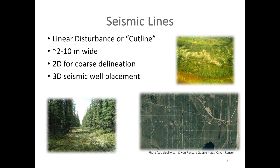There are two different classifications. Two-dimensional seismic lines are used for coarse delineation and tend to be wider. Then we have 3D seismic lines, which are for more detailed well placement. You can see in some of the pictures here this dense network of narrower 3D lines, and this could be an example of a 2D seismic line, which is a bit wider cutting through the forest.